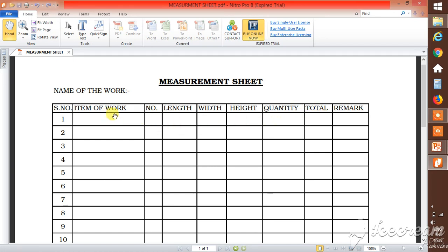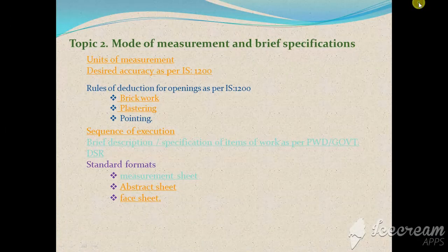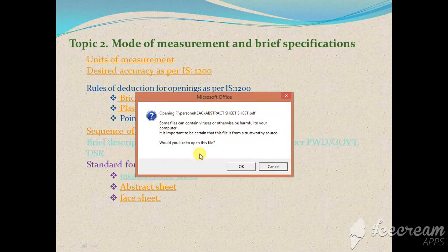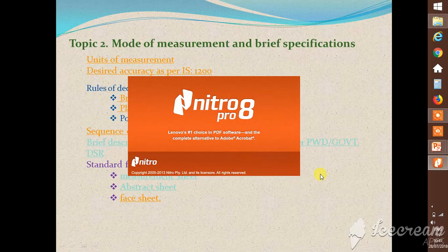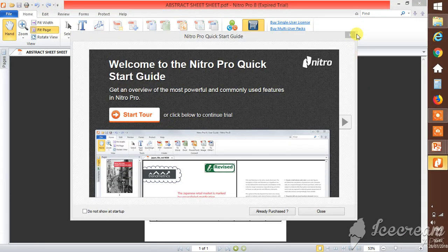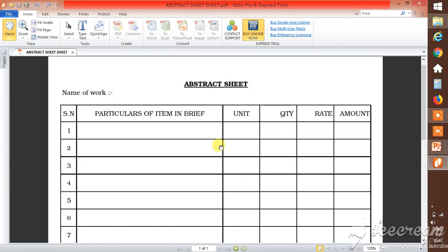Then total quantity. If suppose four items are there, so we can add all this and we can total. So this will be used for calculating the quantity of all materials. Then abstract sheet - this abstract sheet is obviously the sheet which is used for calculating the cost from that measurement sheet.